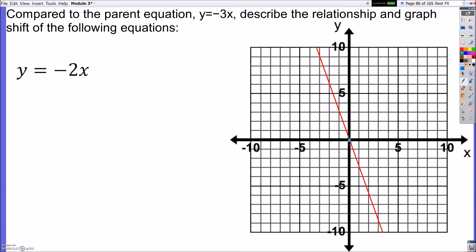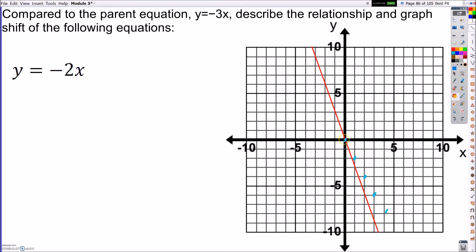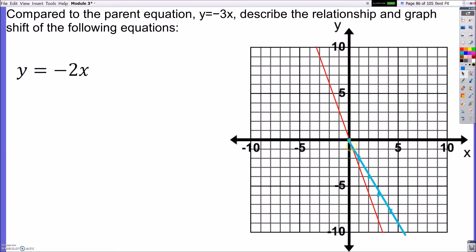So if I start at the origin, I go down 2, over 1, down 2, over 1, down 2, over 1, so on and so forth. And then I'm able to connect these lines.